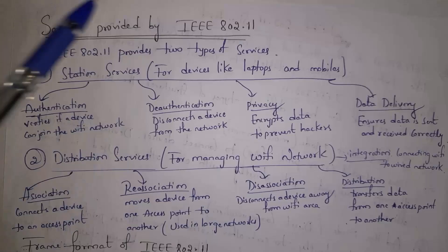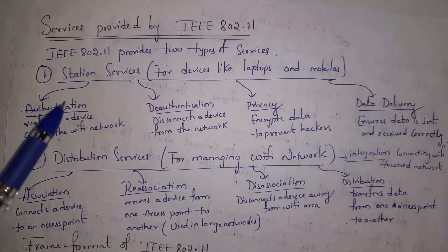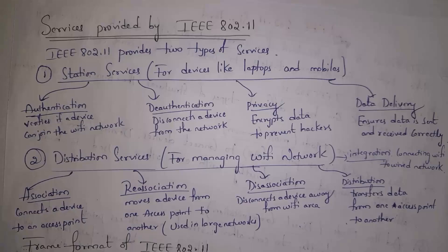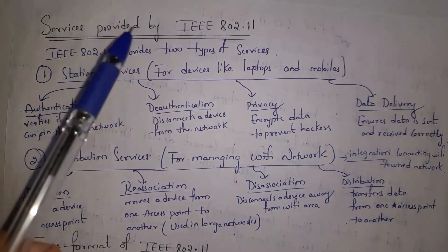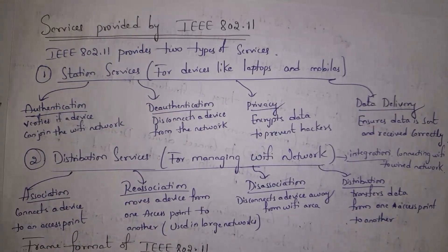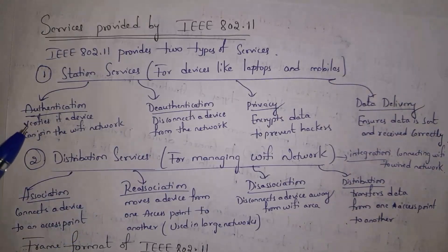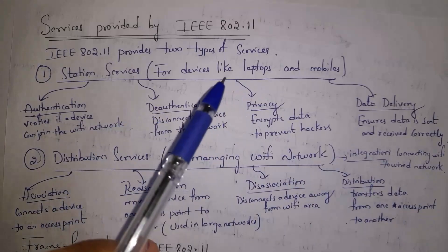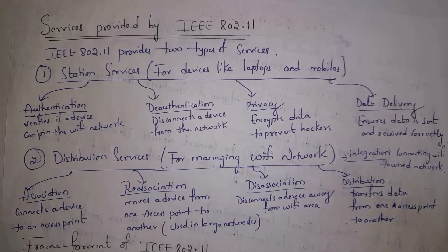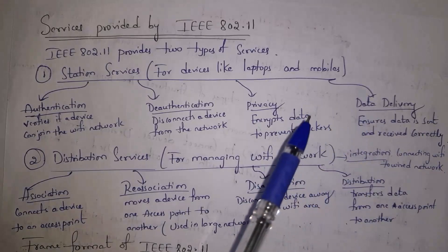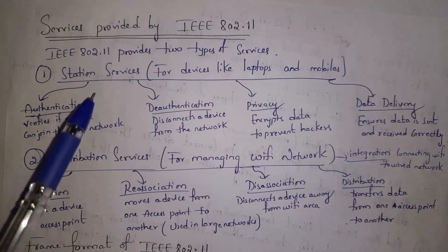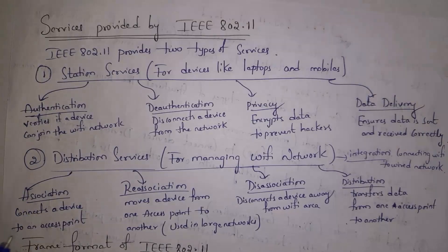Next I will explain services provided by IEEE 802.11 standard. There are two types: station services and distribution services. Station services are provided to devices like laptops and mobiles. The first is authentication — verifying the device. For example, when connecting to Wi-Fi, if the password is correct, authentication is successful; if wrong, the device is disconnected — this is deauthentication. Third is privacy — data is converted into an unreadable format so even if a hacker accesses it, they cannot read it. Fourth is data delivery service — the standard ensures the sender can correctly send data to the receiver.